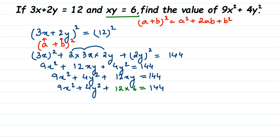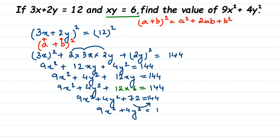12 times 6 is 72, so we have 9x squared plus 4y squared plus 72 equals 144. Transposing 72 to the other side of the equation: 9x squared plus 4y squared equals 144 minus 72, which equals 72. Therefore the answer is 9x squared plus 4y squared equals 72.